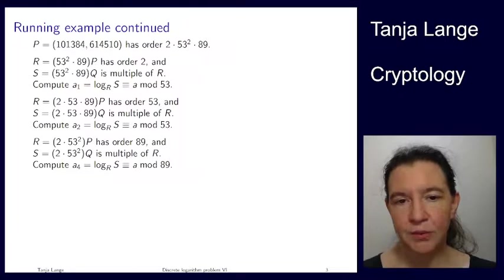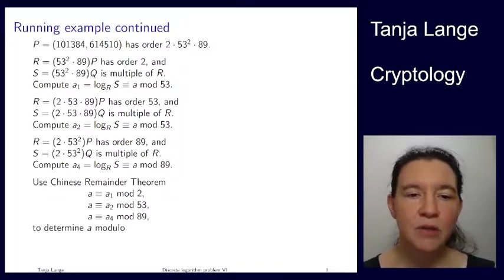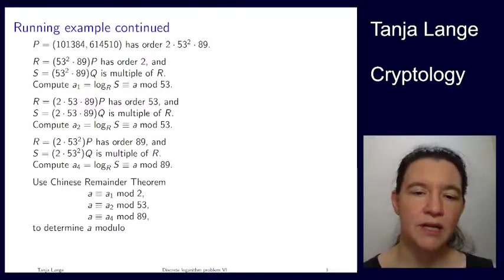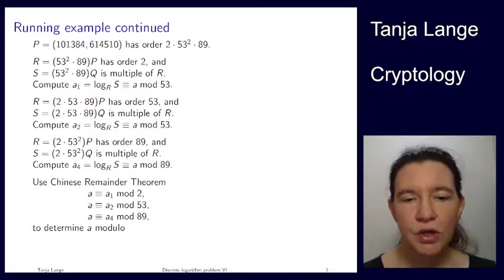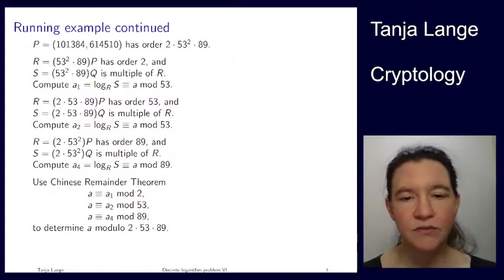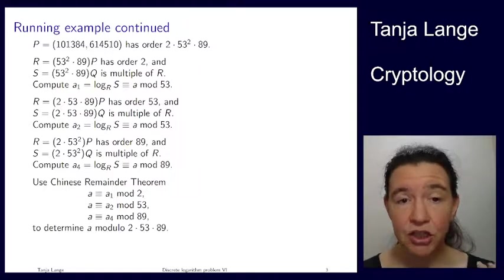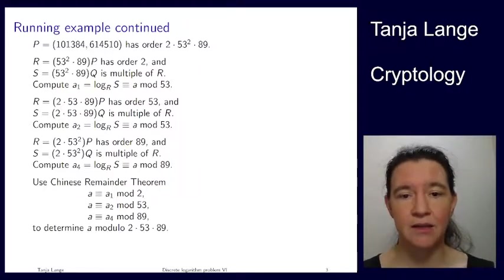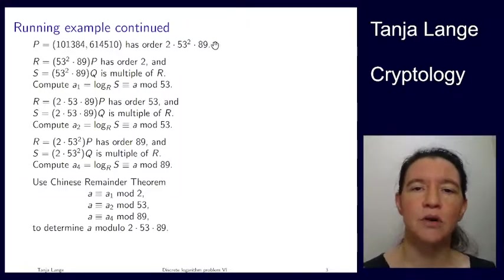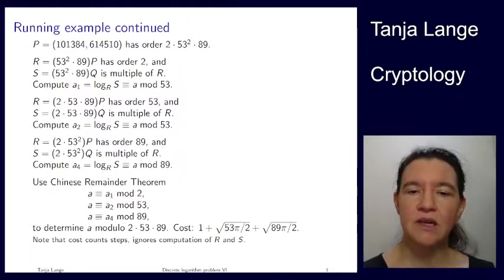That's again even larger than 53, but again it's doable. And so we now have three pieces of information on a. And I made a mistake here. This one here should be a 2 rather than a 53. So we're knowing a mod 2, we're knowing a mod 53, and we're knowing a mod 89. Well, these three numbers are coprime, so we can put them in the Chinese remainder theorem. And the Chinese remainder theorem says, well, if those moduli here are coprime, then we're getting a unique solution modulo their product. So we're now getting a, the discrete log, modulo 2 × 53 × 89.